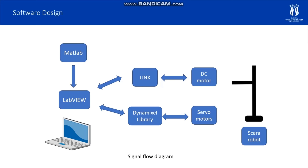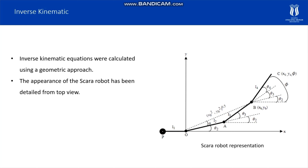The LINX toolkit was used to communicate with the Arduino Mega 2560 microcontroller. Inverse kinematic equations were calculated using a geometric approach. The top view of the SCARA robot has been detailed. As seen in the figure which details the top view of the SCARA robot, the coordinate system was added on the second joint to avoid confusion in the equation solution, and the joint variables are given.